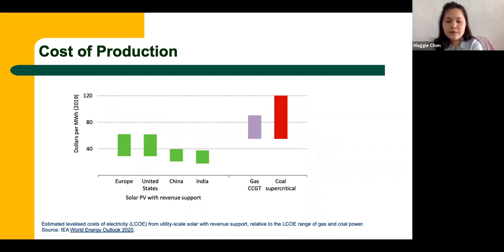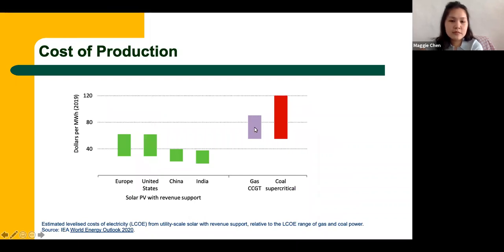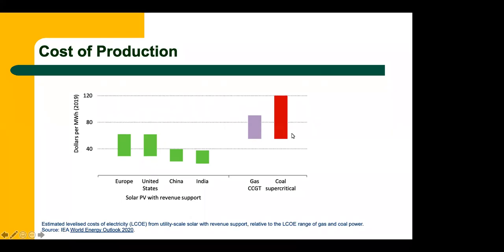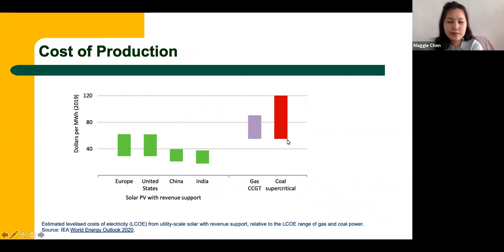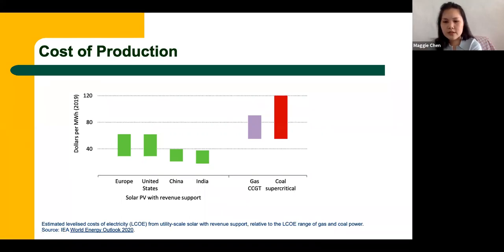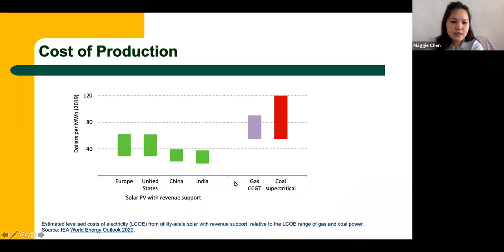Looking at the cost of production for different energy sources: natural gas is around $60 to $90 per megawatt hour. Coal starts at around $60 and goes up to $120 per megawatt hour — more expensive because you have to continuously mine for coal and keep hiring people to bring out the same amount of coal product to get the same amount of energy. Solar PV is a lot lower.